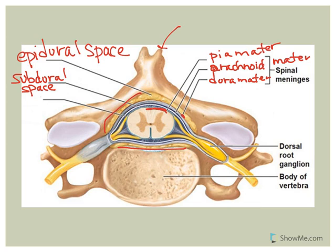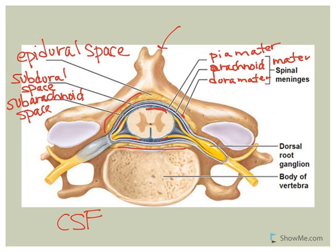Located beneath the arachnoid mater is the subarachnoid space. The dark blue you see in the image represents cerebrospinal fluid filling that space. CSF is also located in an area called the central canal, which is continuous with the fourth ventricle of the brain. So just like in the brain, the subarachnoid space here is filled with cerebrospinal fluid.